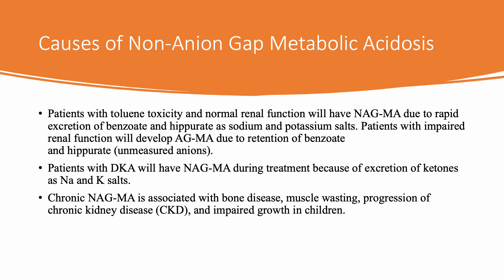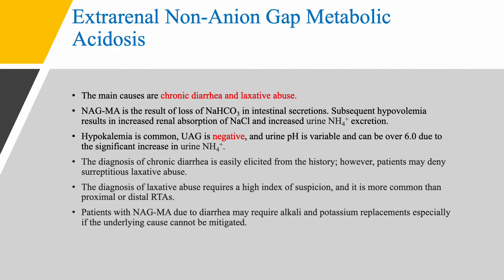Patients with diabetic ketoacidosis — same thing. Initially you have anion gap acidosis, but when you excrete these salts with sodium and potassium, then you don't have the anion gap anymore. Chronic non-anion gap acidosis is bad because it can cause bone disease, muscle wasting, and even progression of chronic kidney disease and impaired growth in children. The main extra-renal causes are chronic diarrhea and laxative abuse — you have loss of sodium bicarbonate in intestinal secretions.